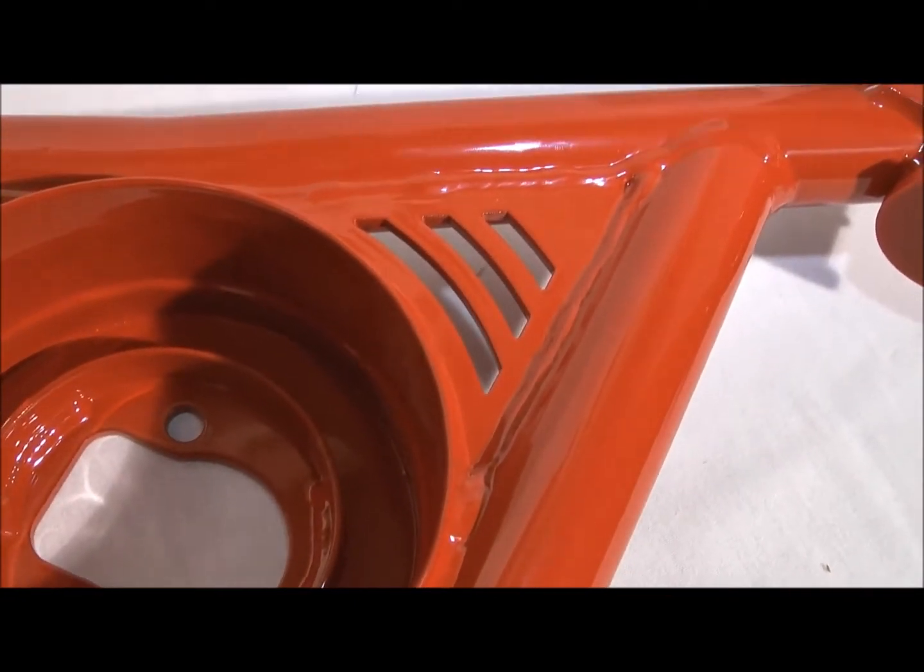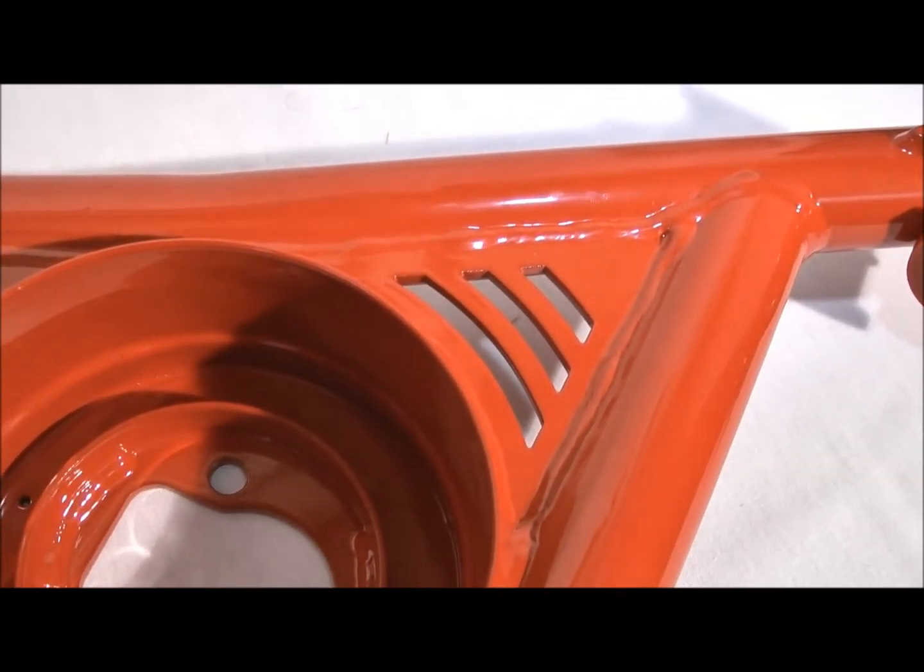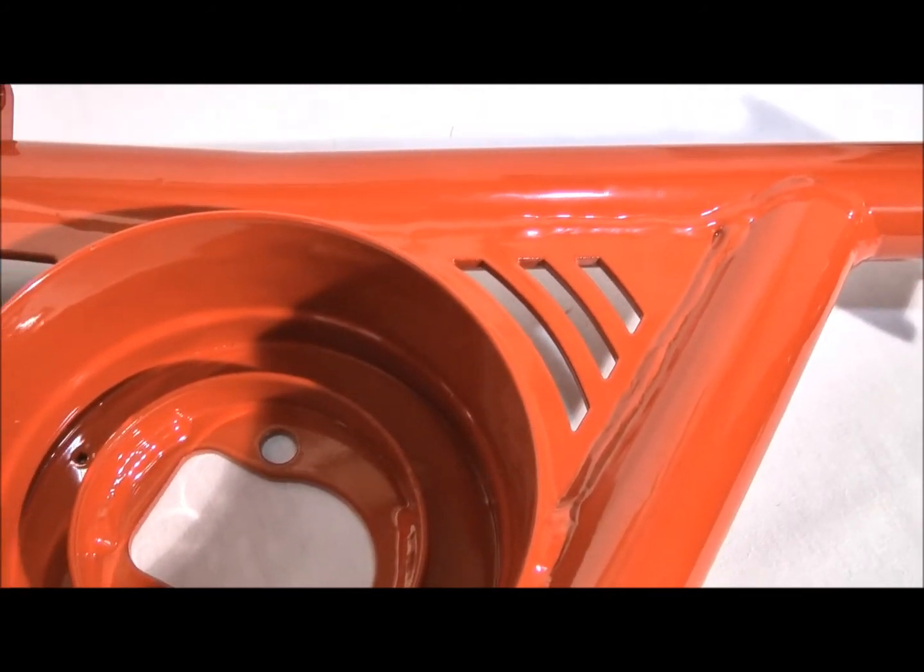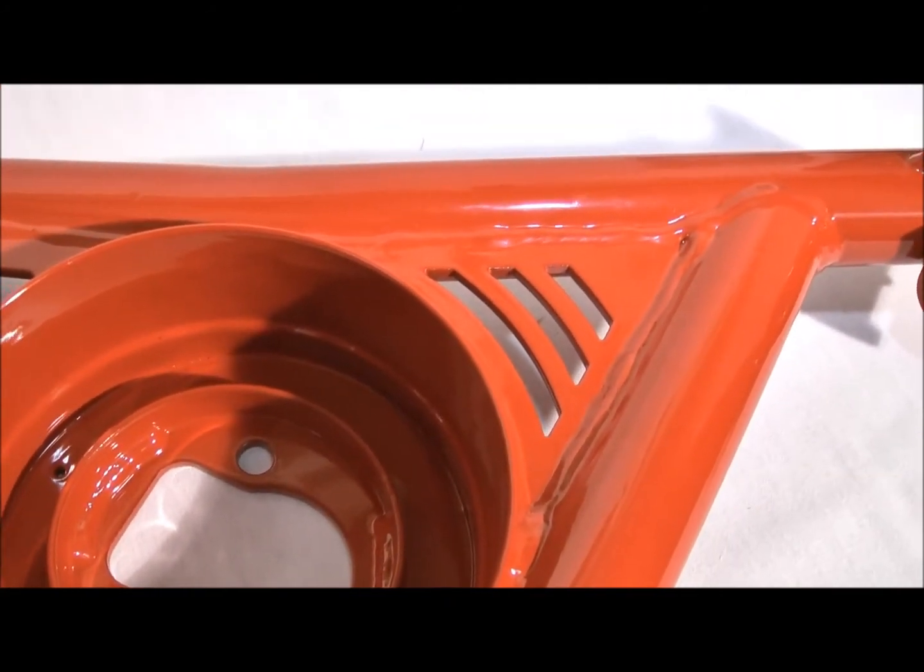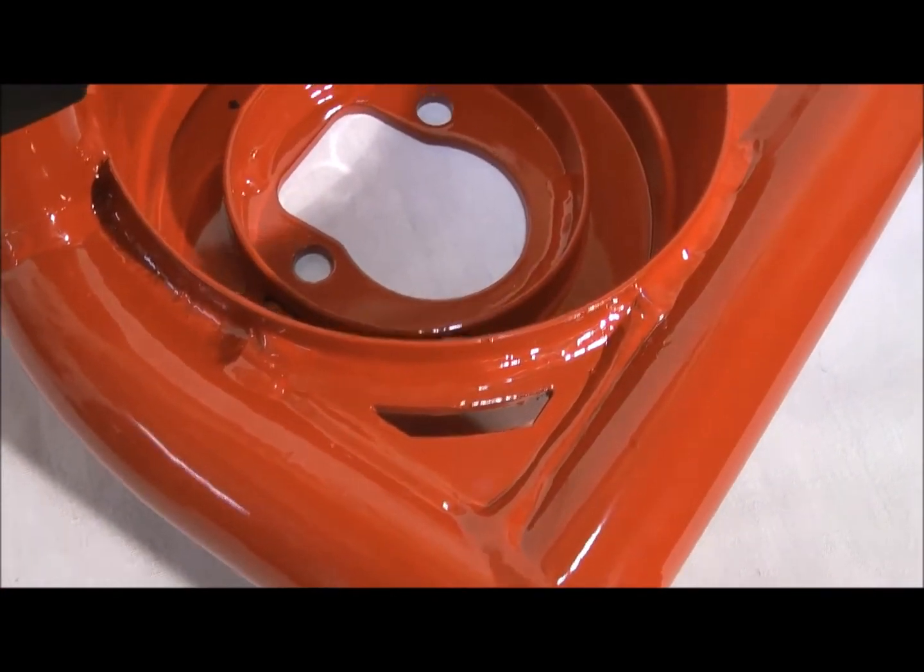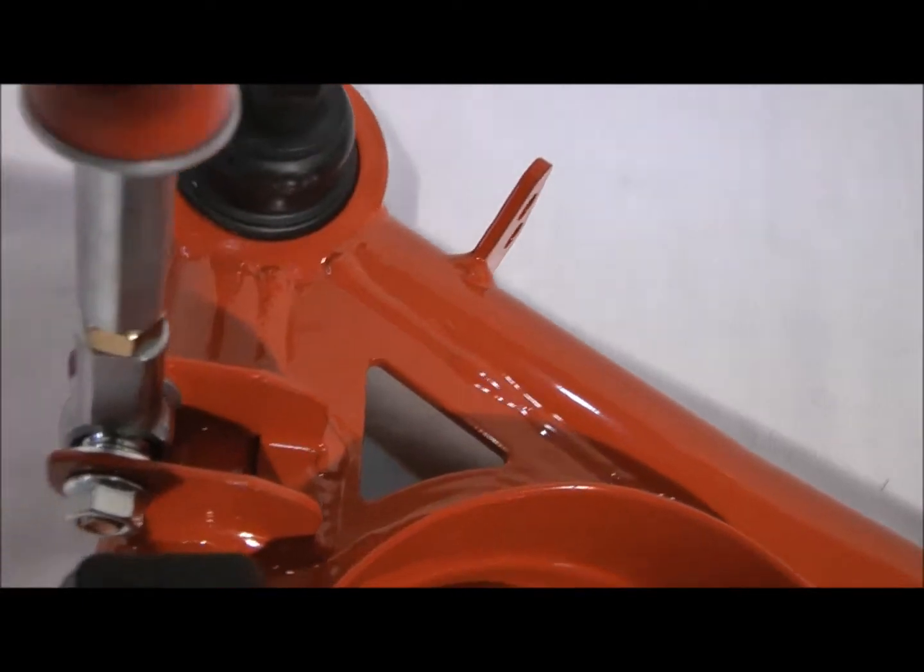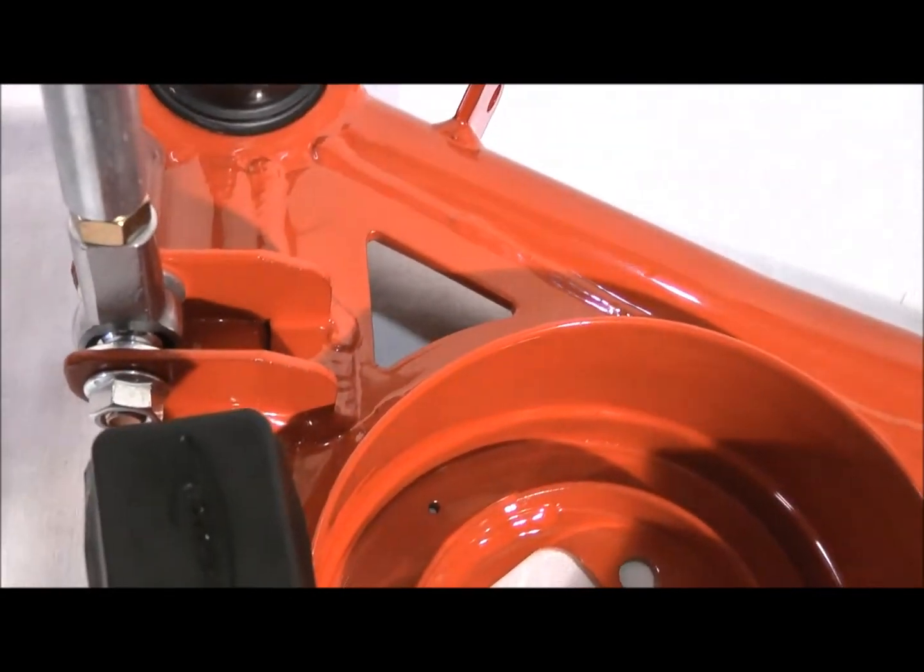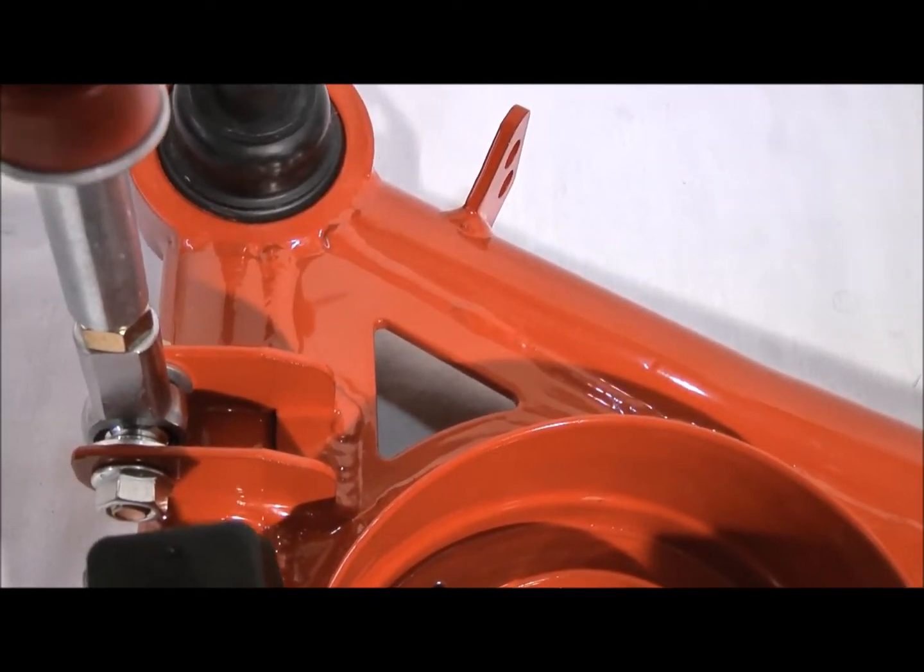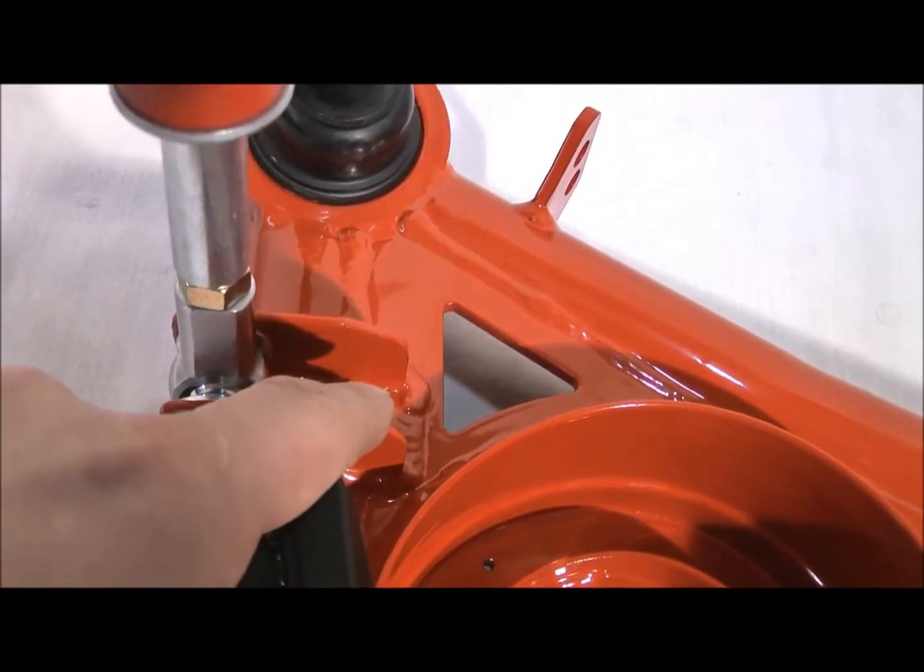You can see between the spring pocket and the tubes of the A-arm we have completely gusseted. These are 3/16 steel gussets that are 100% MIG welded. So you've got one on that corner, you've got one on this corner, and then you've got one up front that ties everything together. Ties the spring pocket, the ball joint tube, and the A-arm tubes, as well as the sway bar end link mount. Ties everything together.